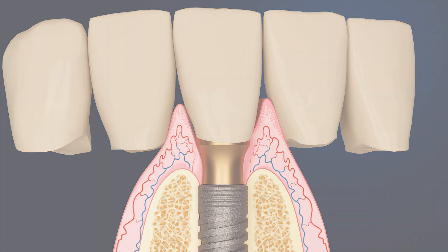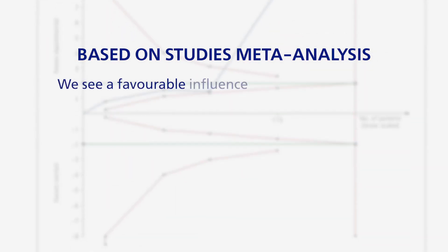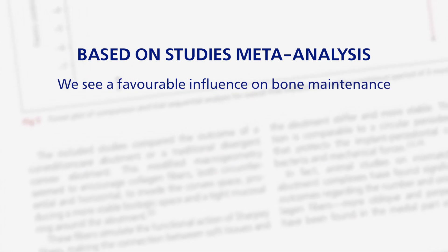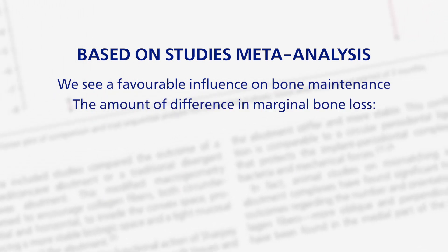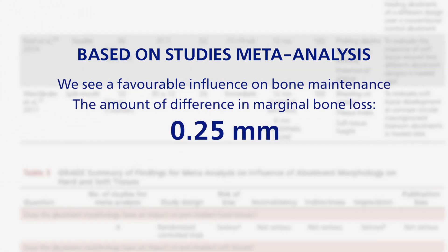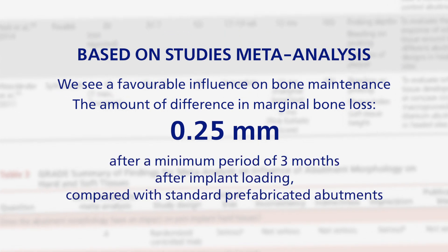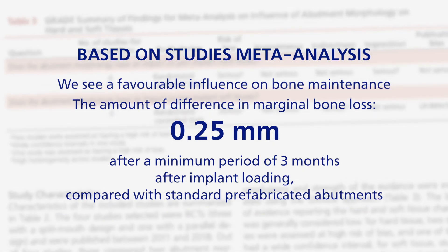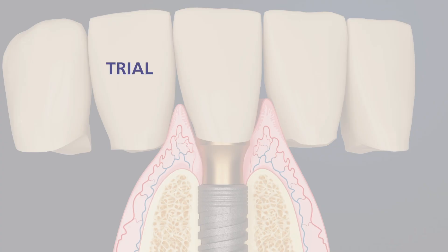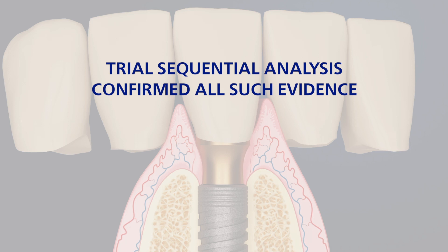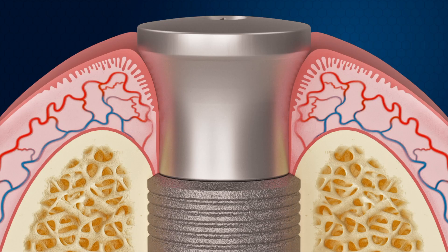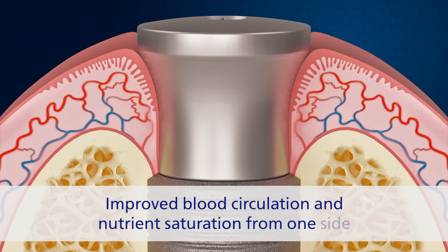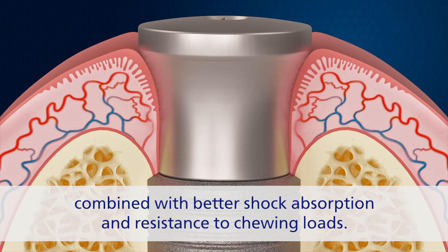Based on the study's meta-analysis, we can clearly see a favourable influence on bone maintenance. The amount of difference in marginal bone loss is 0.25mm after a minimum period of 3 months after implant loading, compared with standard prefabricated abutments. The trial sequential analysis confirmed all such evidence. The main reasons are improved blood circulation and nutrient saturation on one side, combined with better shock absorption and resistance to chewing loads.